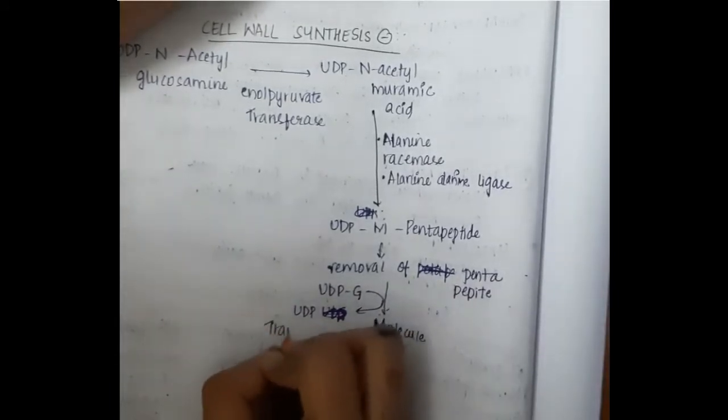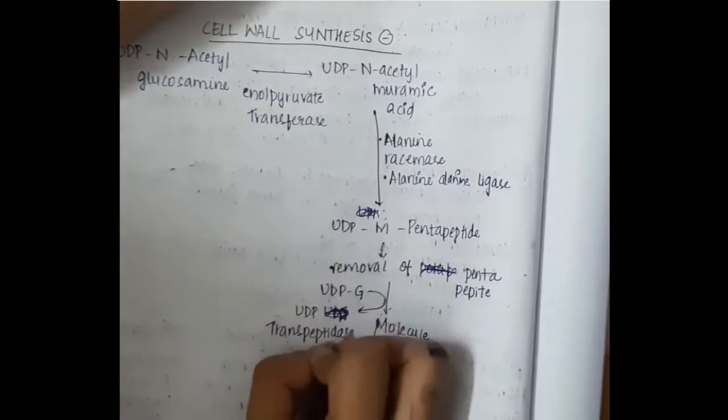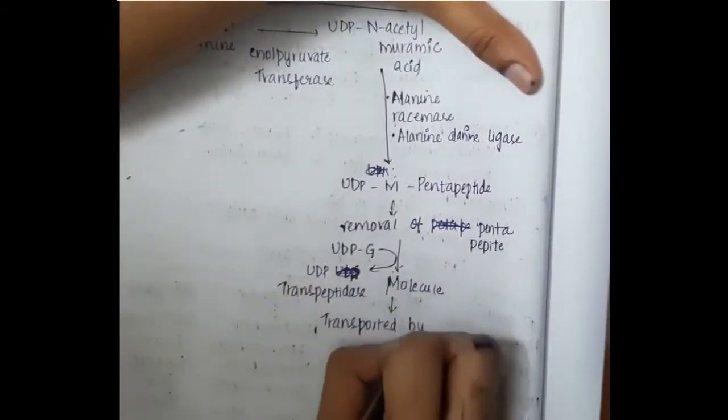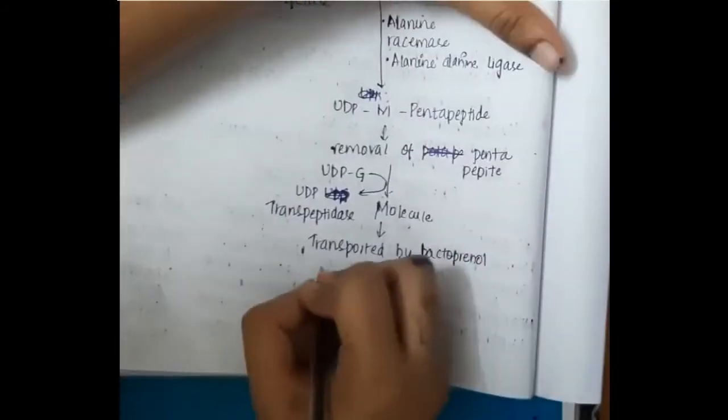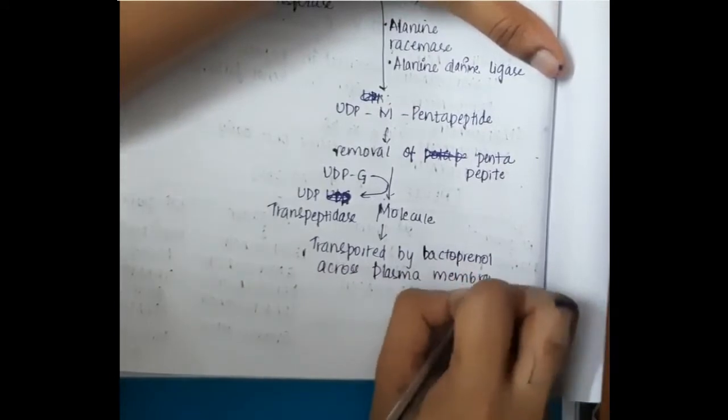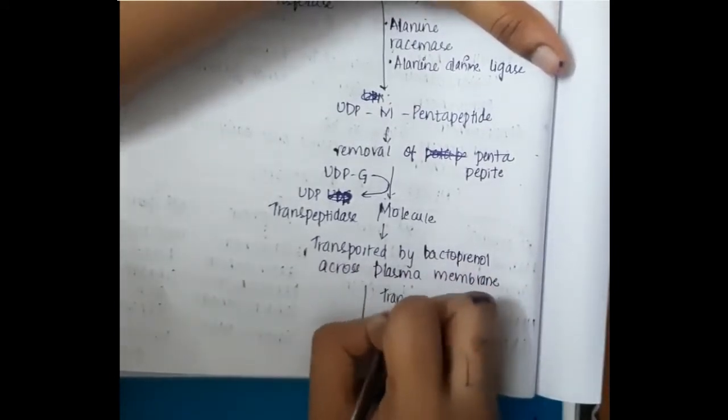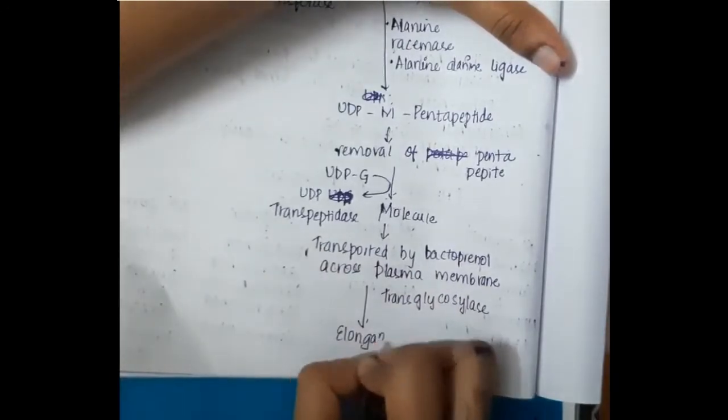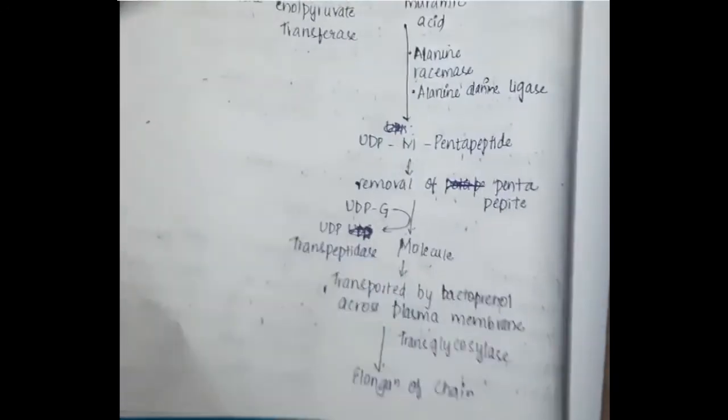Now this results in the formation of a molecule which in the presence of transpeptidase is transported by bactoprenol across the plasma membrane, and in the presence of transglycolase, this molecule undergoes elongation of the chain.